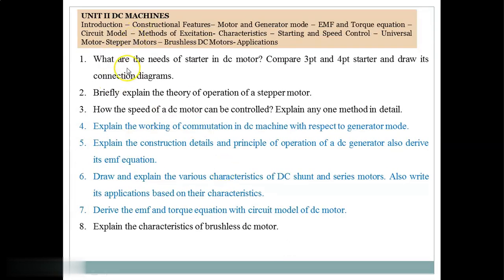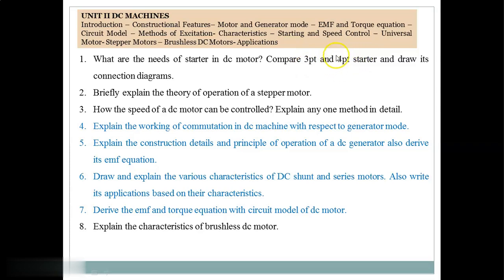Unit 2 is DC Machines. Question 1: What are the needs of a starter in a DC motor? Compare three point and four point starters and draw their connection diagrams. To minimize starting current, we use starters for DC motors. The three point starter is used for shunt motor, and the four point starter is used for compound motor. We have to compare these two starters and draw the related circuit diagrams.